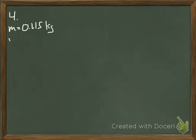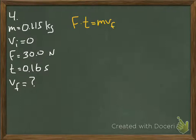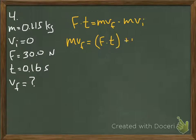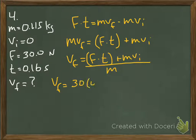In question number four, we're given the mass of a hockey puck. The question states that it starts at rest. After a player makes a shot, it exerts 40 newtons on it, and it takes 0.16 seconds to apply that force. The question is: what is the final velocity of the hockey puck? We're going to use the impulse momentum theorem, rearranging to solve for MVF first, and then dividing both sides by the mass to solve for just the final velocity. At this point we should have everything we need.